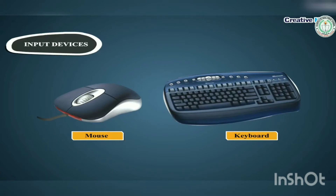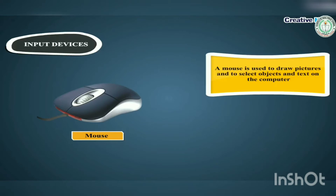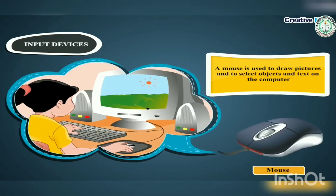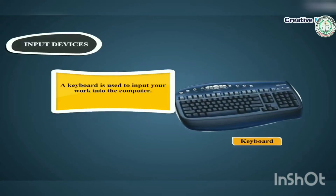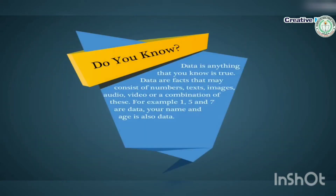The most commonly used input devices are keyboard and mouse. A mouse is used to draw pictures and select objects and text on the computer. A keyboard is used to input your work into the computer. Do you know, data is anything that you know is true. Data are facts that may consist of numbers, texts, images, audio, video, or a combination of these. For example, 1, 5, and 7 are data.